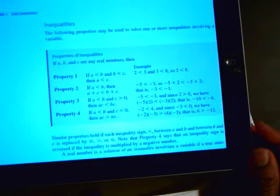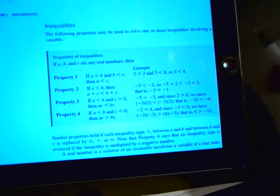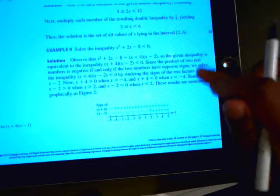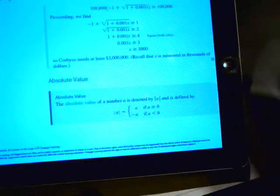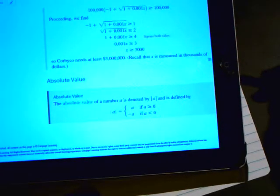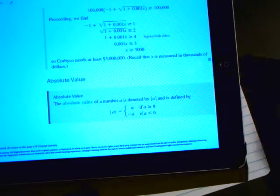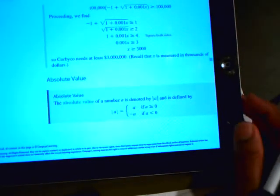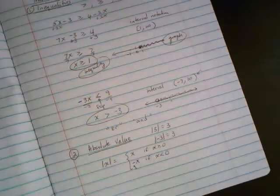So these definitions and properties are given in the text. Page 20 in your textbook, you have properties of inequalities right here with some examples. And then the absolute value definition, they're using absolute value of a as itself if a is greater than or equal to 0, negative a if a is less than 0. Okay, onward to some problems.